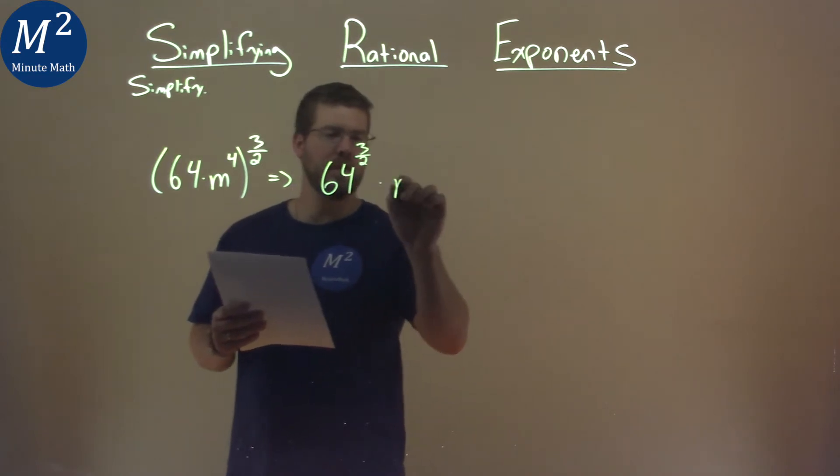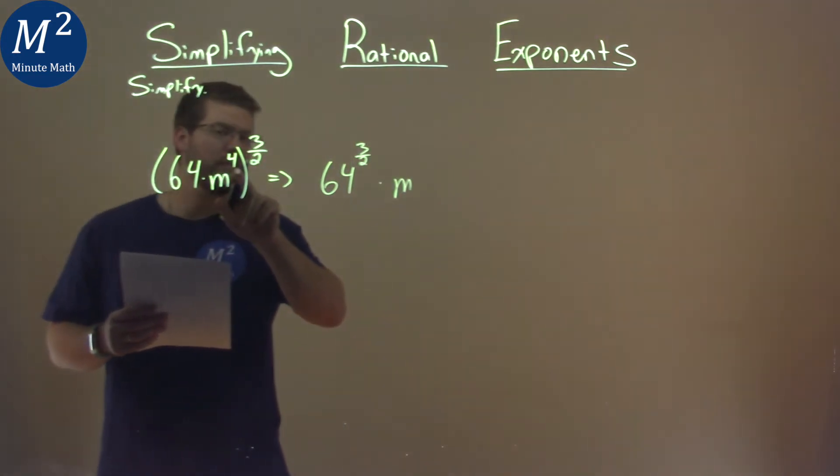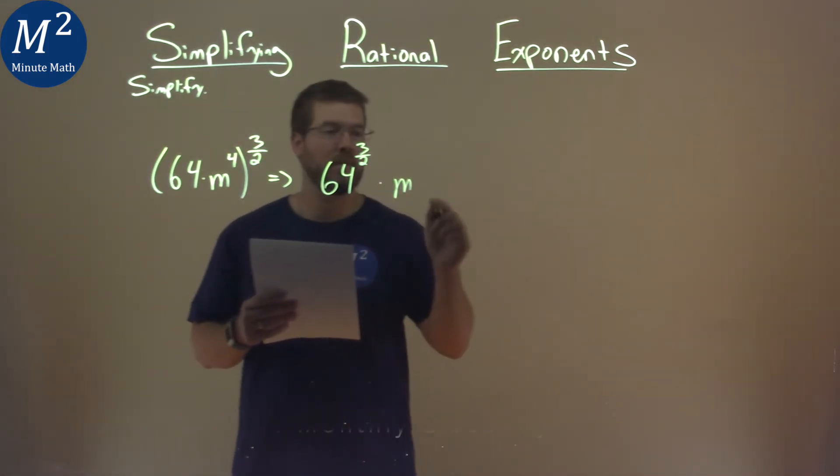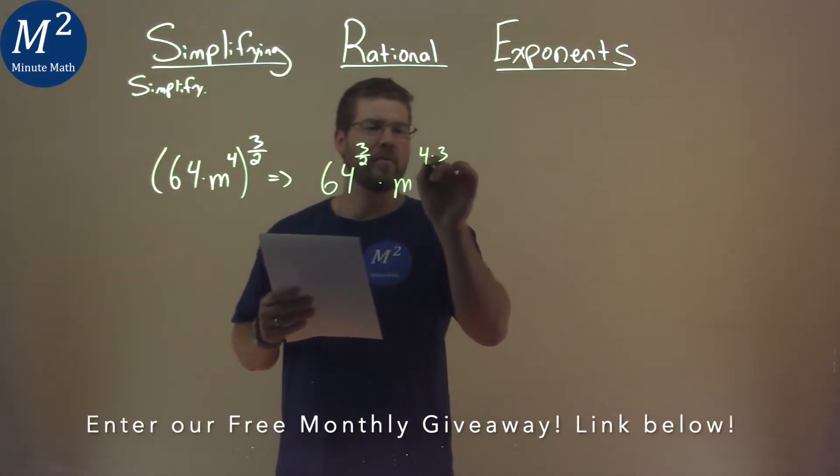times m, and we have our exponents, right, 4 raised to the three-halves power, we multiply those exponents. So, it's going to be 4 times 3 over 2.